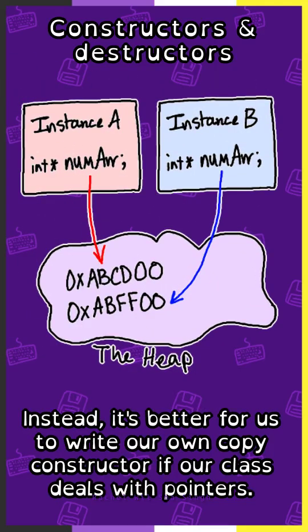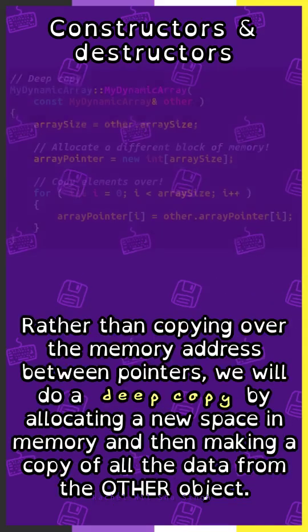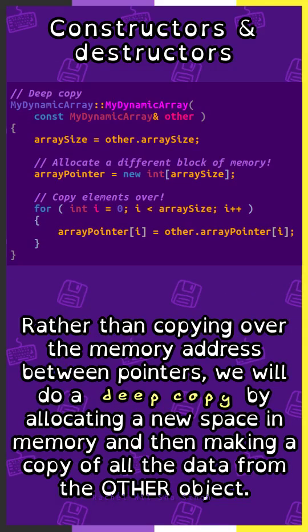Instead, it's better for us to write our own copy constructor if our class deals with pointers. Rather than copying over the memory address between the pointers, we will do a deep copy by allocating new space in memory and then making a copy of all the data from the other object.